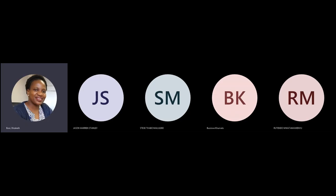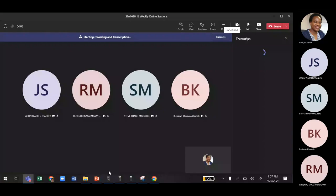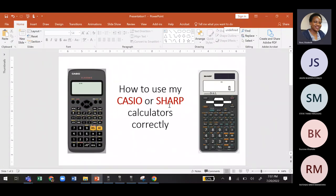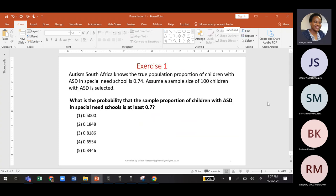The purpose of today's session is simple: we're here to show you how to use your calculator — whether it's a Casio or a Sharp — to do certain calculations. We already touched on the sampling distribution, so we're not going to go into too much detail.